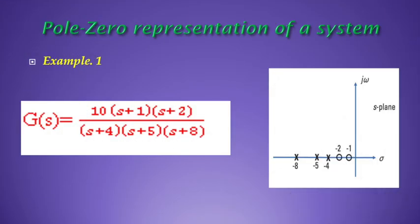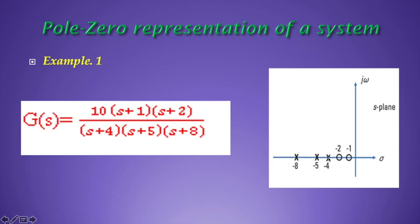Pole-zero representation of a system. Given a transfer function, setting the denominator equal to zero gives poles at S equals minus 4, minus 5, and minus 8, plotted on the negative real axis of the S-plane. Setting the numerator N(s) equal to zero gives zeros at S equals minus 1 and S equals minus 2, which are also plotted on the S-plane.